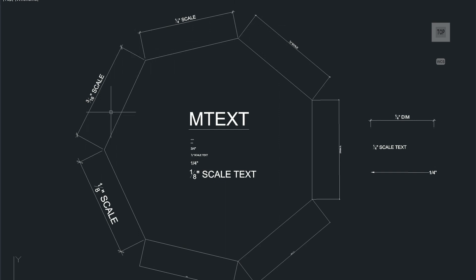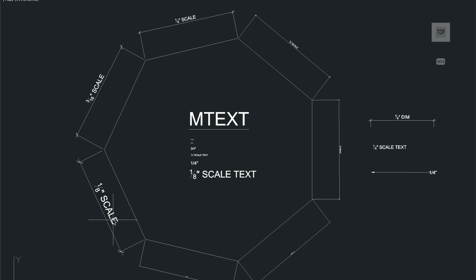These are standard dimension styles and they're all based on different scales. For example, here is a quarter inch scale dimension. As you plot at a smaller scale, your text sizes are going to become larger. What we're really trying to achieve is a consistent dimension proportion between all the different scales in a drawing, which I'm going to show you in just a bit.